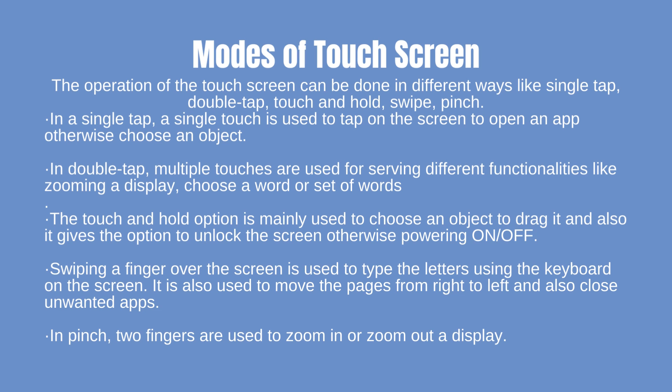The touch and hold option is mainly used to choose an object to drag it, and also gives the option to unlock the screen or power on/off. Swiping a finger over the screen is used to type letters using the on-screen keyboard, move pages from right to left, and close unwanted apps. In pinch, two fingers are used to zoom in or zoom out a display.